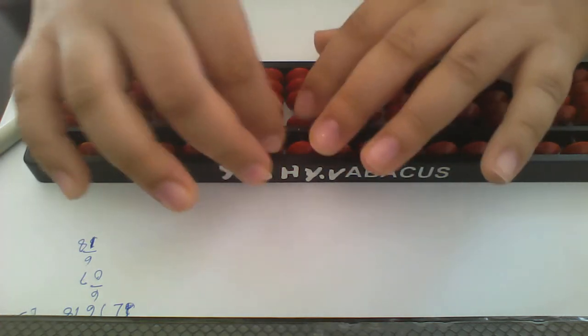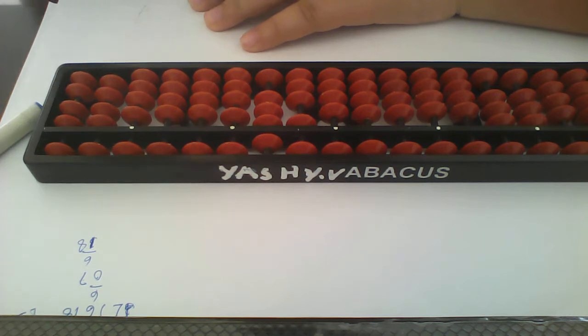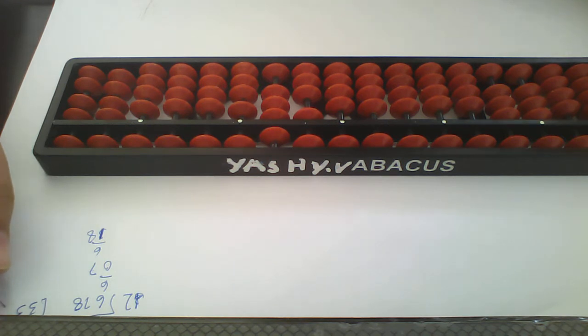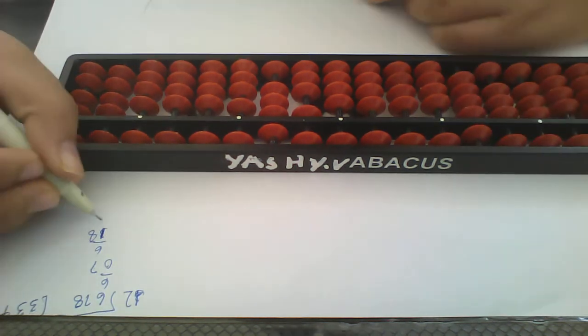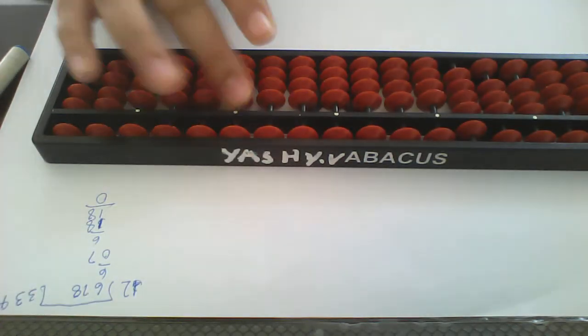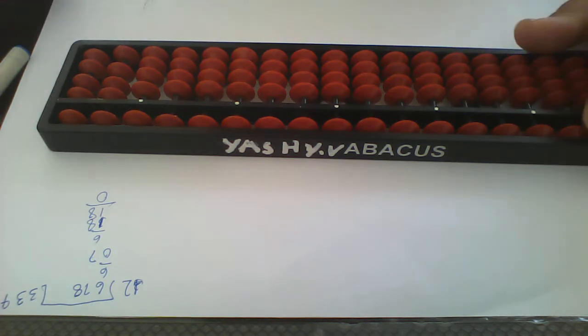18 is the remainder left. And now 18 is coming in 9, right? So we will put here 9. 18 minus, and the answer is 0. So our answer is 339.